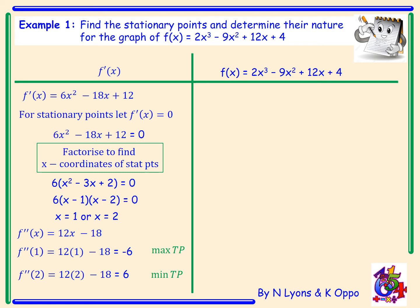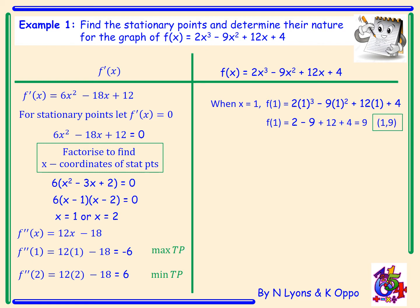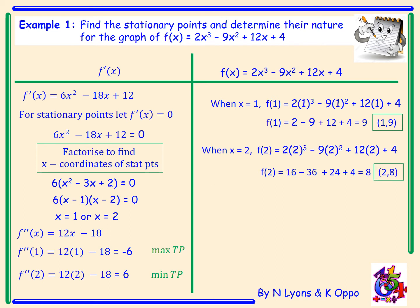Now that we know we have a maximum turning point when x is 1 and a minimum turning point when x is 2, the last step is to obtain our y-coordinates. When x is 1: 2(1)³ minus 9(1)² plus 12(1) plus 4 gives 2 minus 9 plus 12 plus 4, which equals 9 — giving coordinate (1, 9). When x is 2: 16 minus 36 plus 24 plus 4 equals 8 — giving coordinate (2, 8). So we have a maximum turning point at (1, 9) and a minimum turning point at (2, 8).